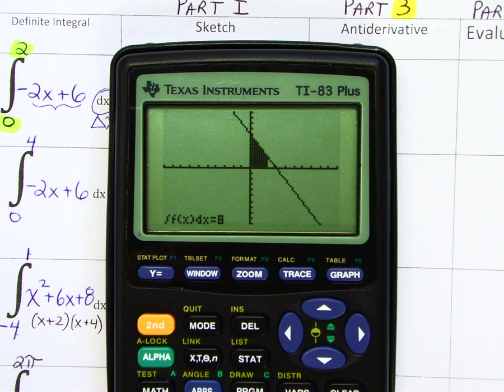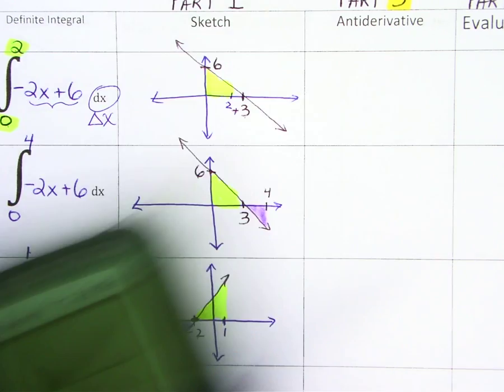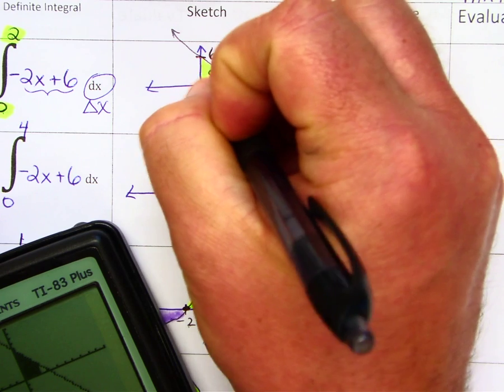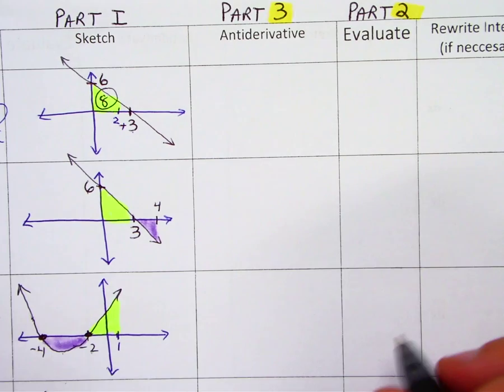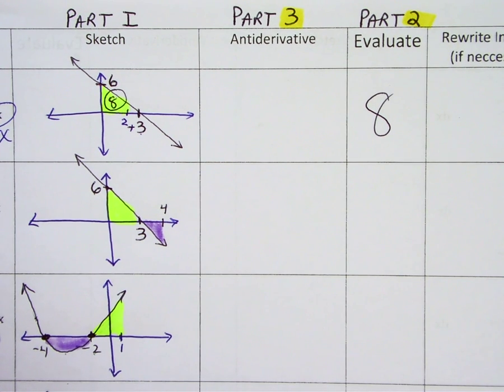And it shades in a little area there. So that little guy there is 8, 8 units. So the evaluate answer in this case is 8. My graphing calculator spit that out at me.